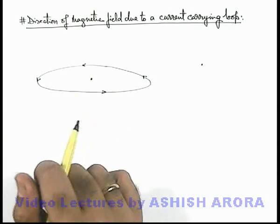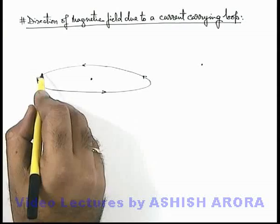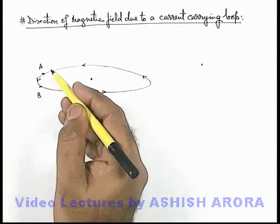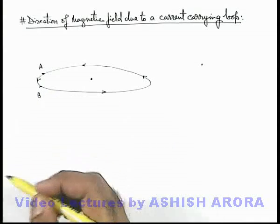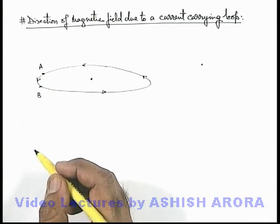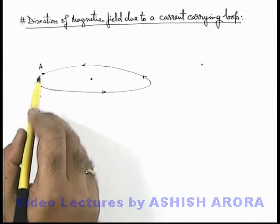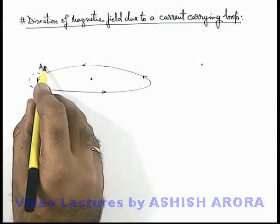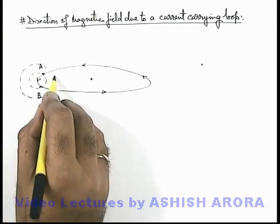Then here we can see if we consider a small element, say this is an element A-B, in which the current is coming out of the plane of this loop. Then by using right hand thumb rule we can say magnetic line of forces in its surrounding will exist in form of concentric circles like this.